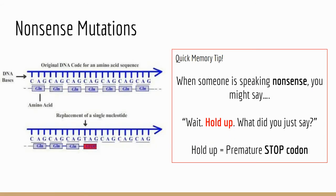The final type of mutation you were introduced to were nonsense mutations. This is where you change one base and instead of an amino acid being added, you have a stop codon. A way to remember this: when someone is speaking nonsense, you might say "wait, hold up" — you can think about "hold up" as a premature stop codon, as a way to remember that nonsense mutations happen when you have a premature stop codon added.